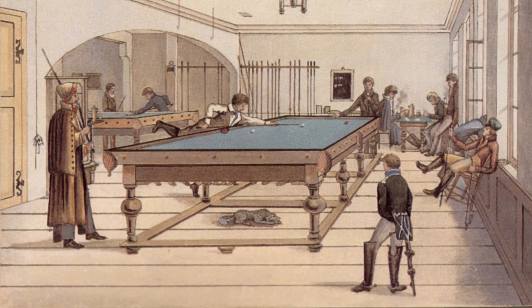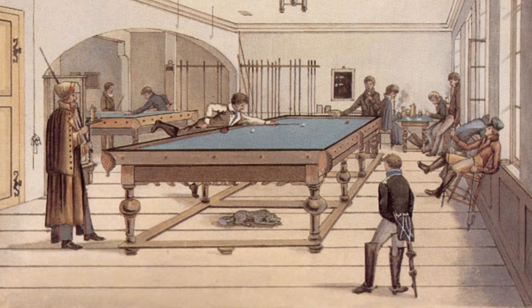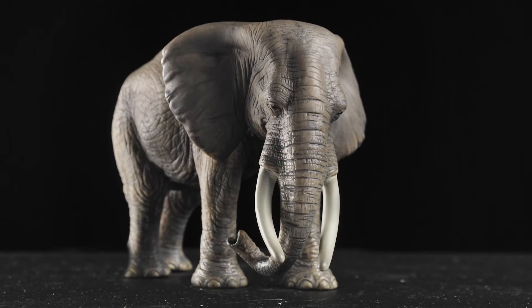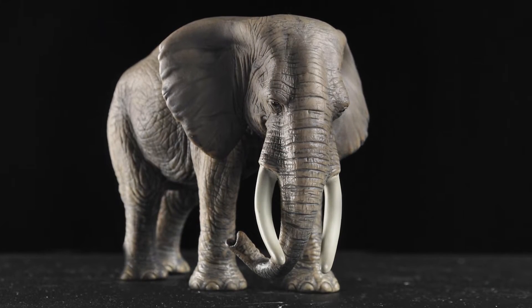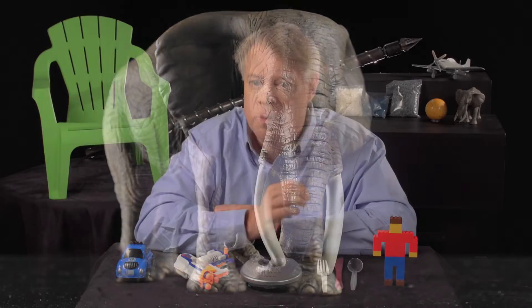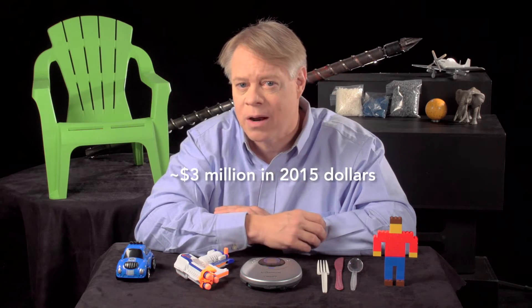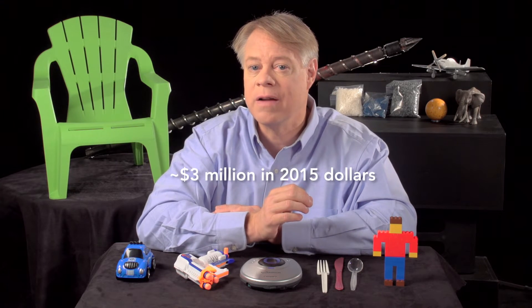Injection molding was invented to solve a problem for billiards. In the 19th century, billiard balls were composed of ivory harvested from the tusks of African elephants. This devastated the elephant population, so a billiards manufacturer offered a $10,000 prize for a replacement for ivory.